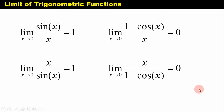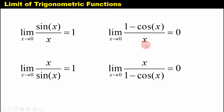In these four special limits, you have to look at the value of the inside angle and your denominator. If your inside angle and your denominator are equal, the answer is automatically 1 for sine x over x. And if it's 1 minus cosine x over x, as long as your inside angle and your denominator are equal, the answer is equal to 0.